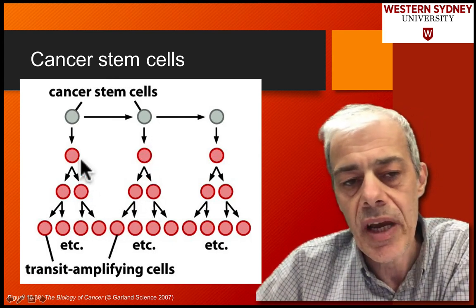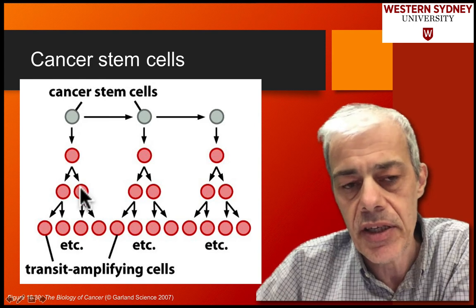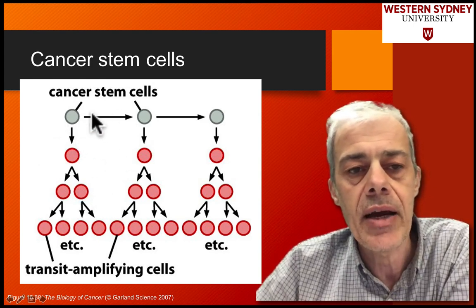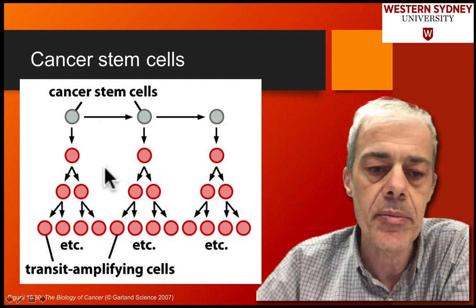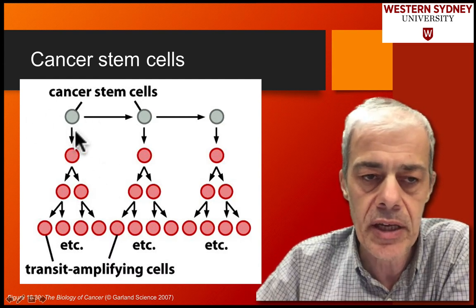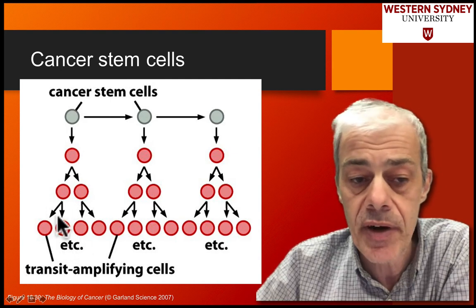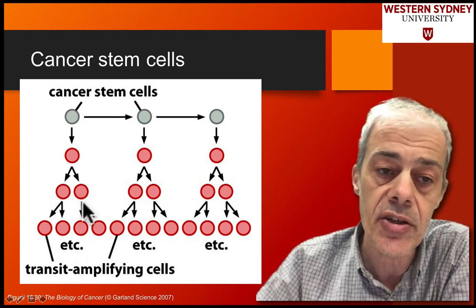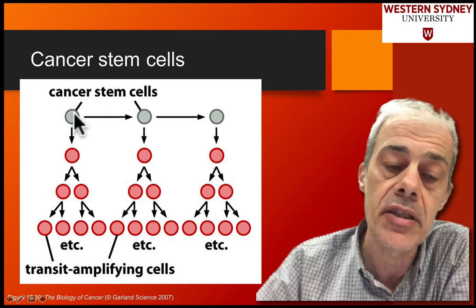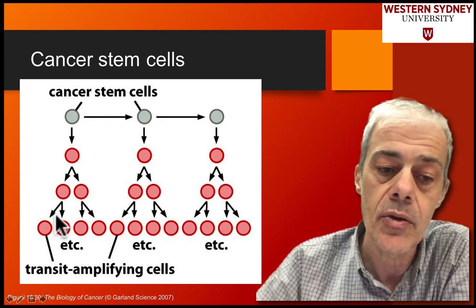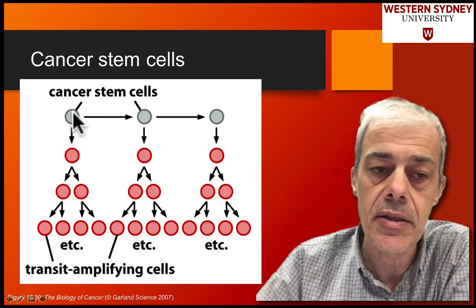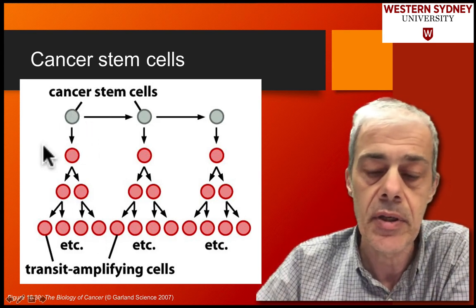Typically this is normal — we have cells that give rise to other cell types in the body, that's how our bodies work — but we're looking at cancer in these stem cells. They still function to give these transiently amplified cells, but all of these cells contain the genetic mutation that's contained within the stem cell. So all of these have the mutations that are present in the cancer stem cell.